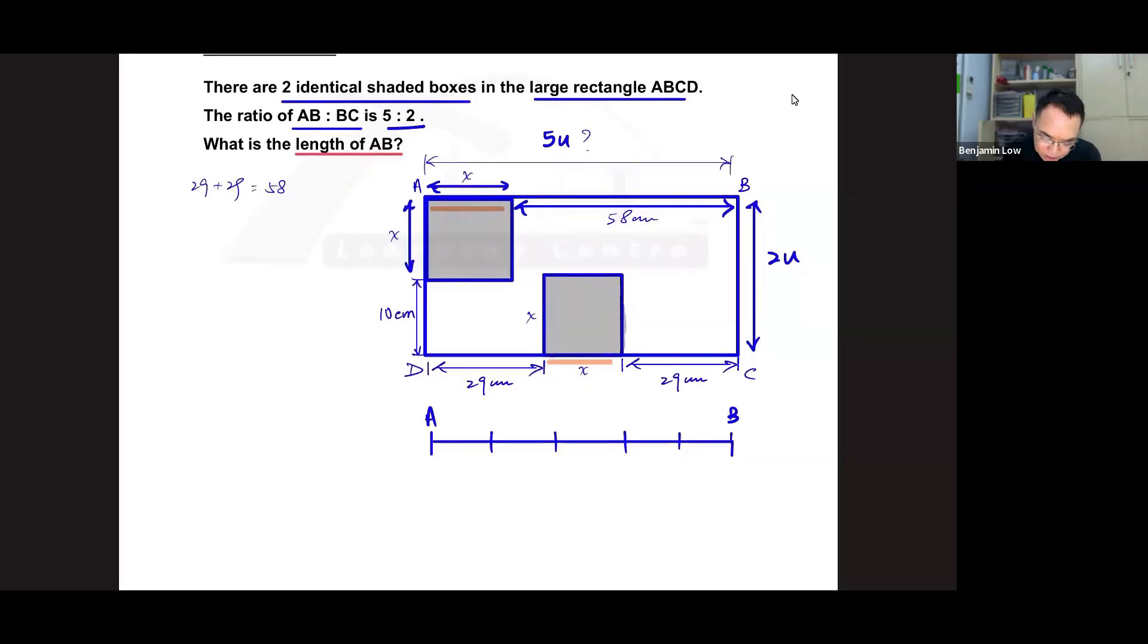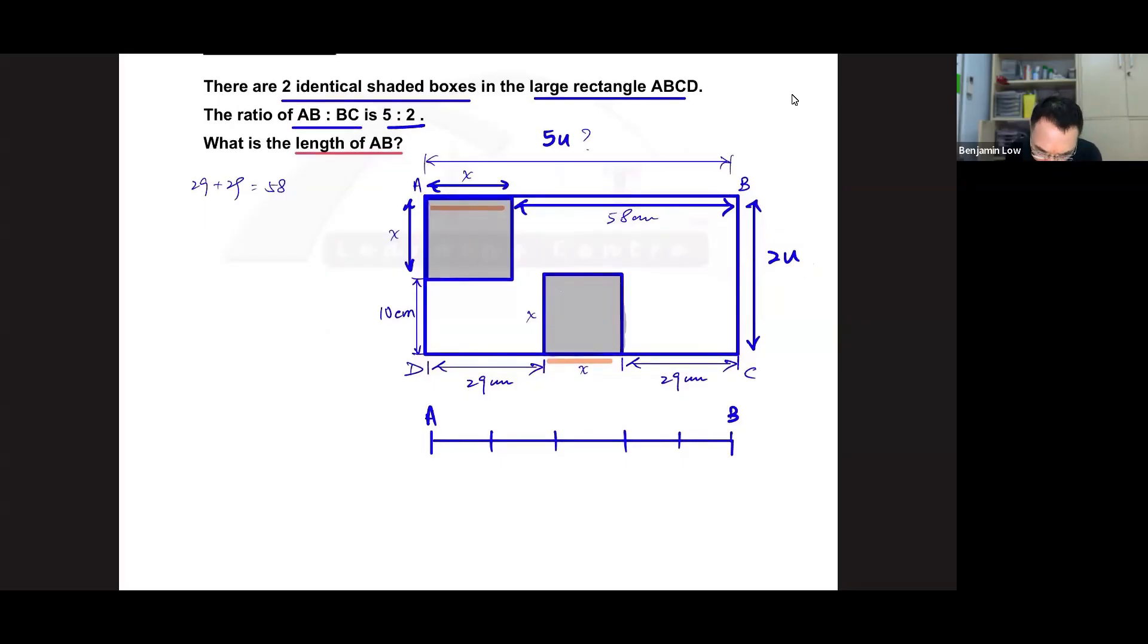And then I want to take this line, which is equal to this line, which is 10 plus x. And I'm going to draw it as 2 units, which means that its length is over here. Okay, so this is 2 units. So this will be BC. Alright, 5 units and 2 units.